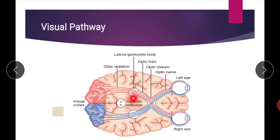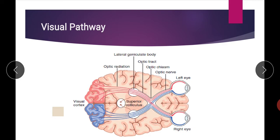The optic tract terminates on the lateral geniculate body, which is one of the nuclei of the thalamus, because this is a sensory pathway. Most sensory pathways first relay on the thalamus before reaching the cortex — the thalamus is the main relay center for most sensory incoming fibers. So the optic tract fibers terminate in the lateral geniculate body, where they make synapses with neurons whose axons then form the optic radiation and ultimately terminate on the visual cortex.